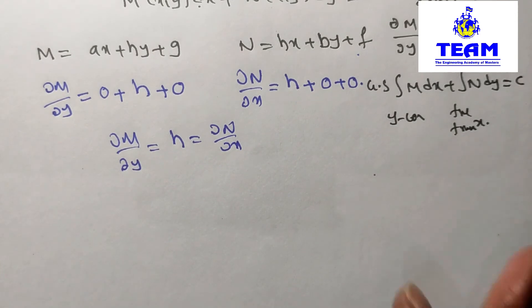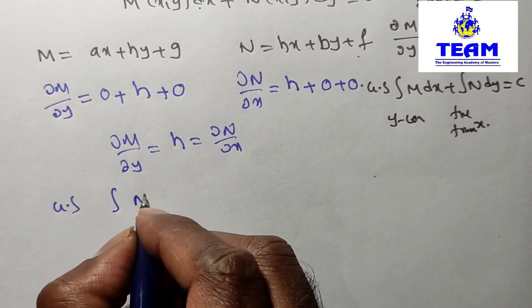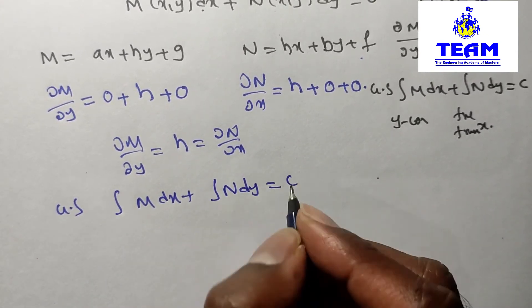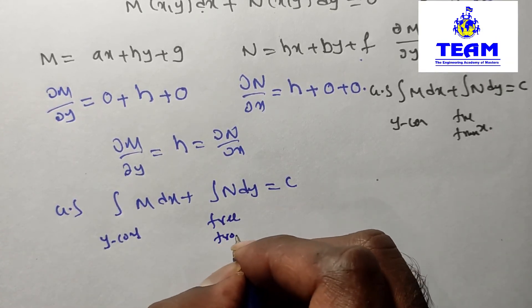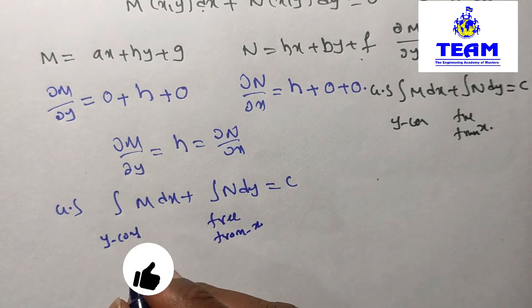So we will get the general solution. What is the general solution? General solution is integral of M dx plus integral of N dy equals C, where y is constant. This is free from x terms. We should not take the x terms in this case.